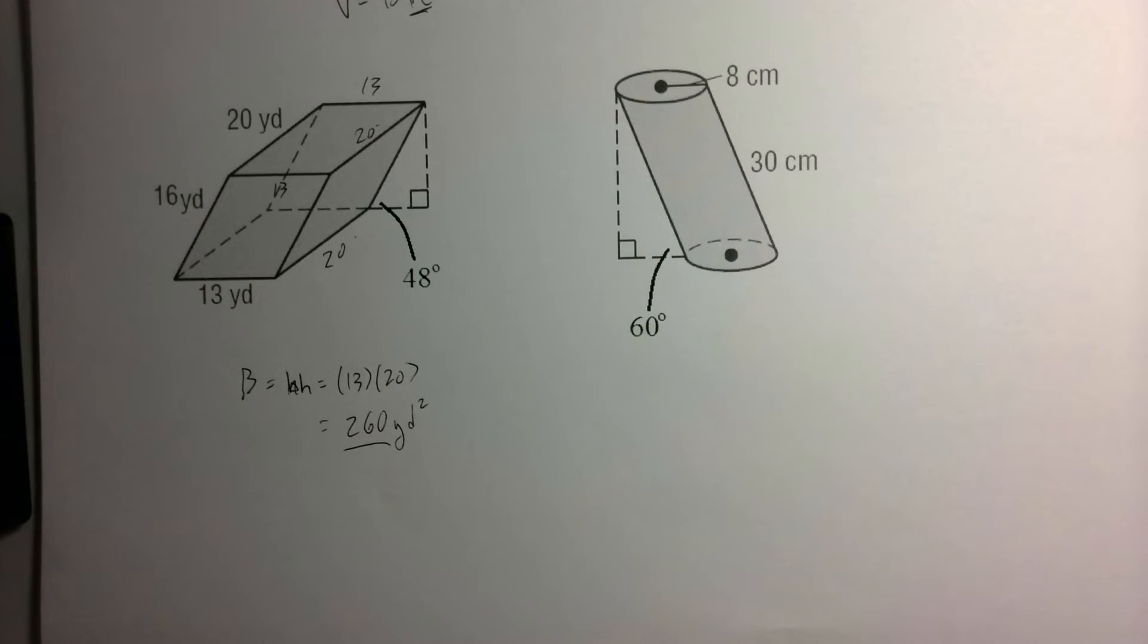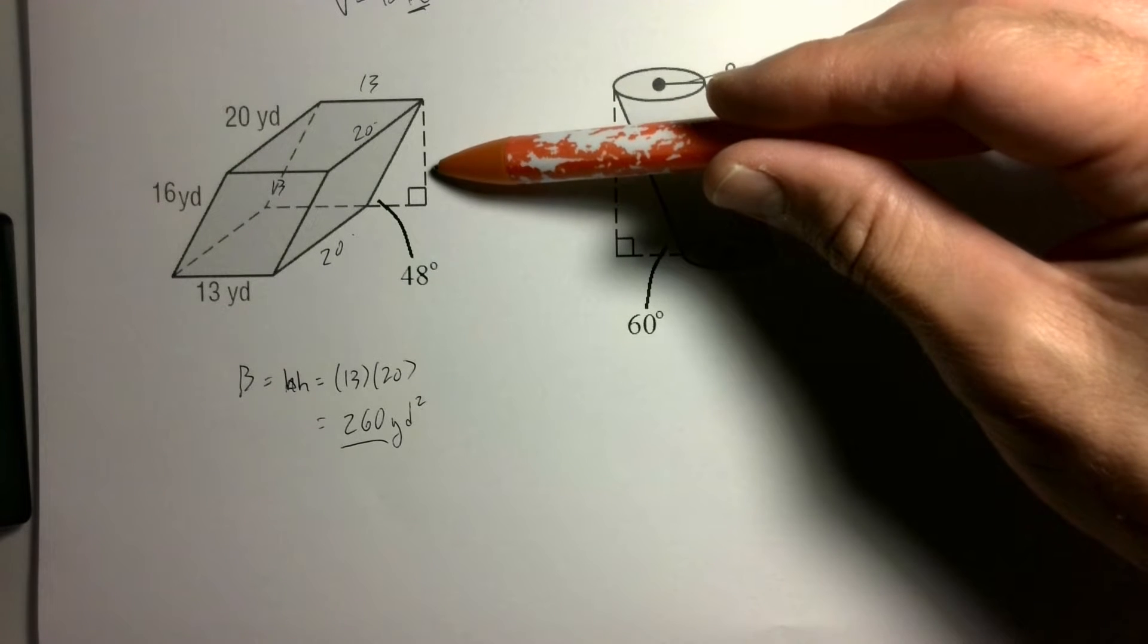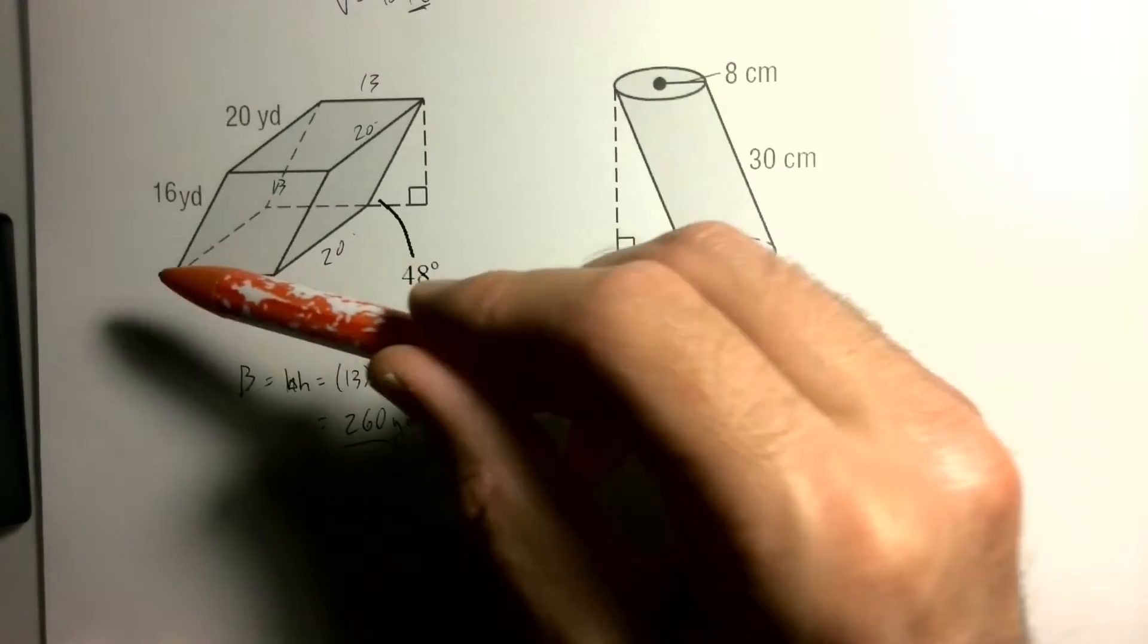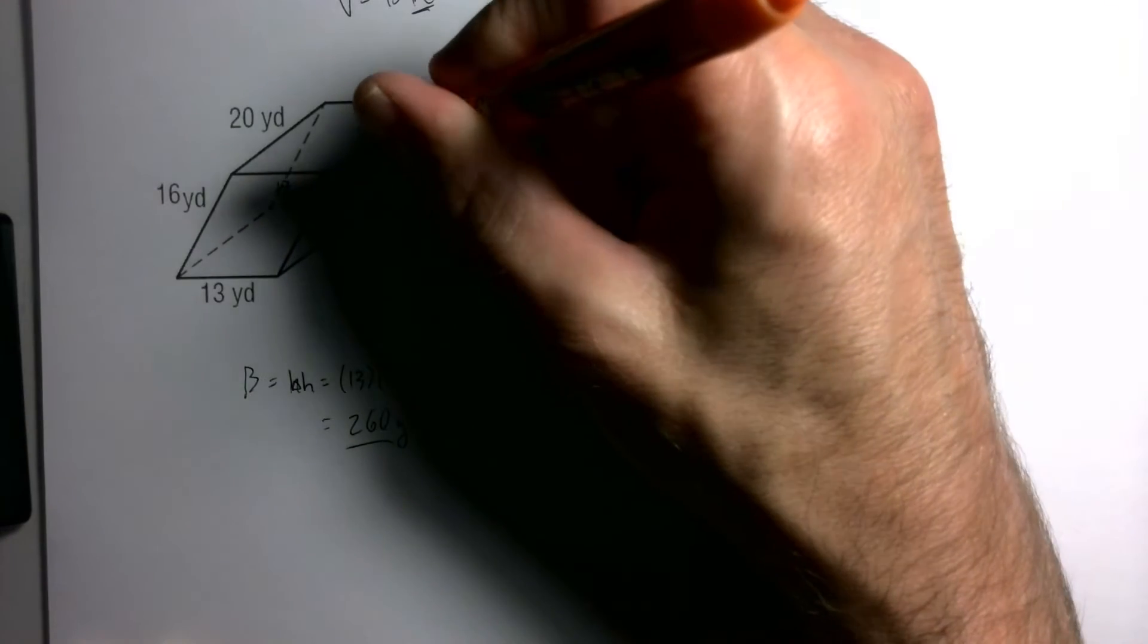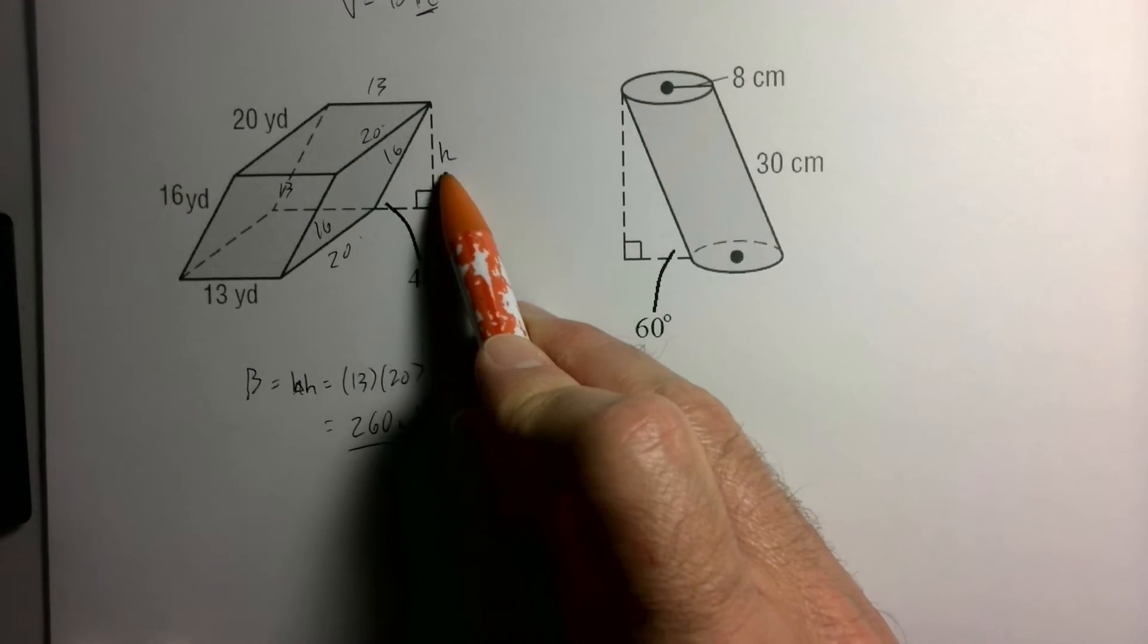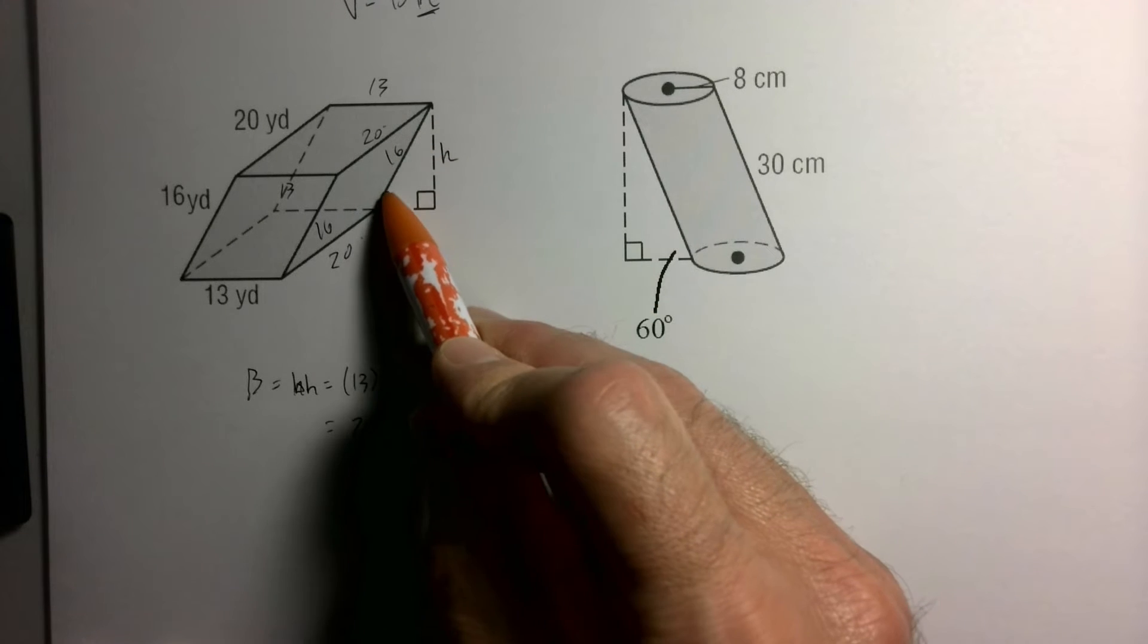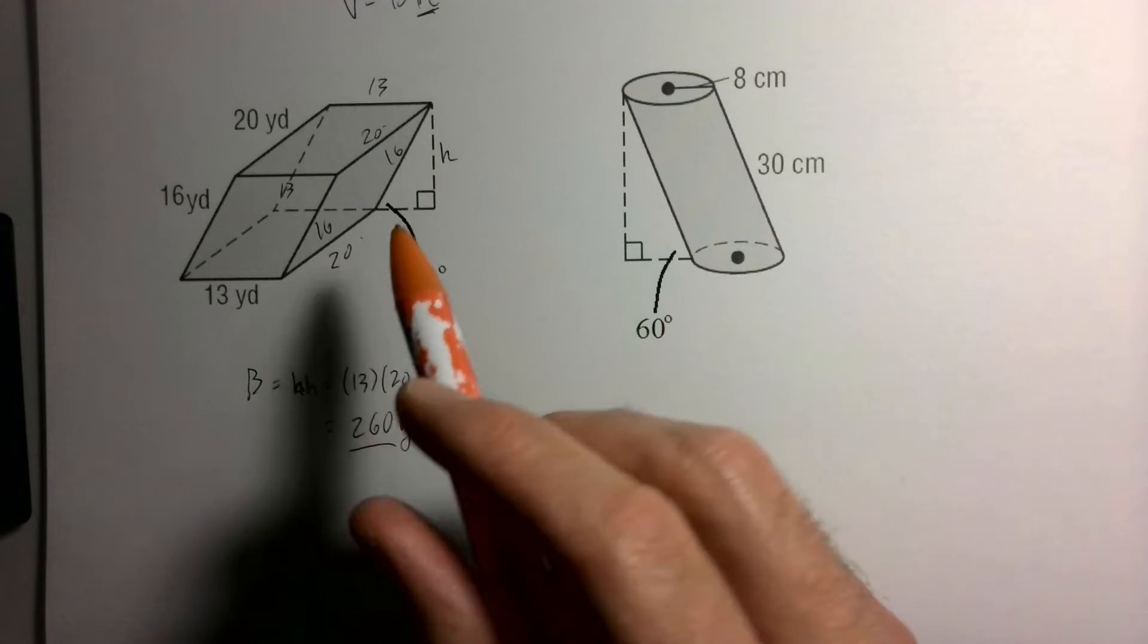The problem is I don't have the height. If I look over at this right triangle, this should be a trig problem. If this is 16, all of these slanted edges are going to be 16 as well. From this angle, my opposite is the height, my hypotenuse is 16. Opposite hypotenuse - that should be sine.